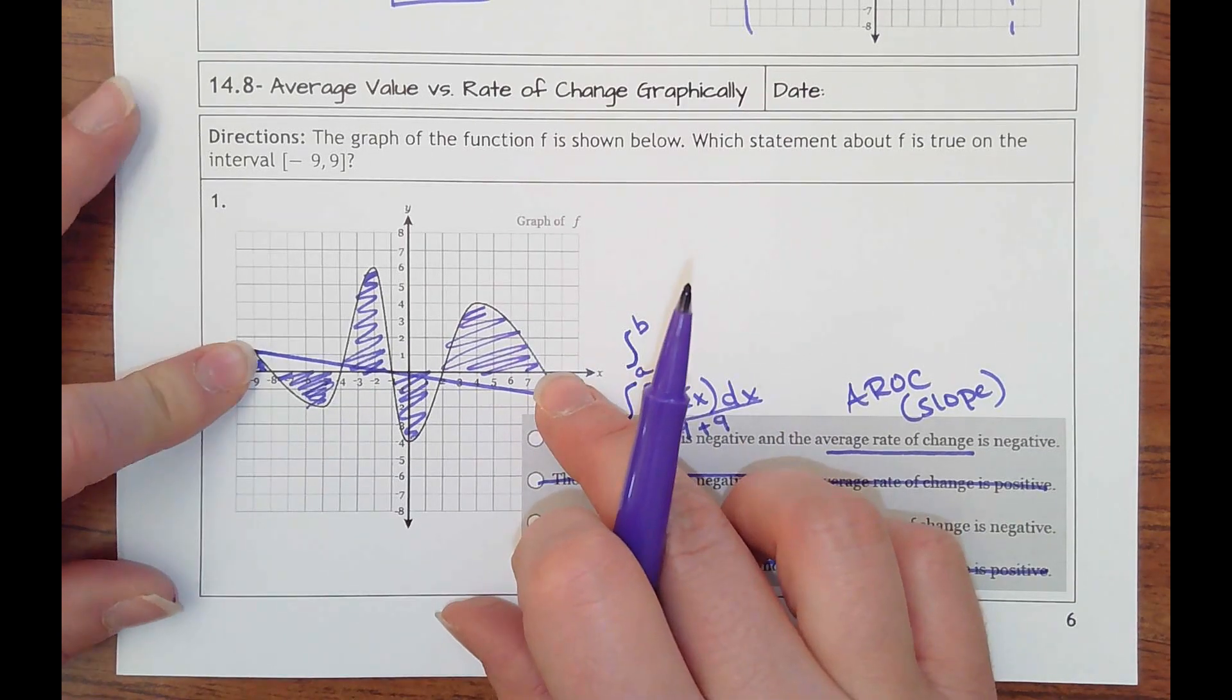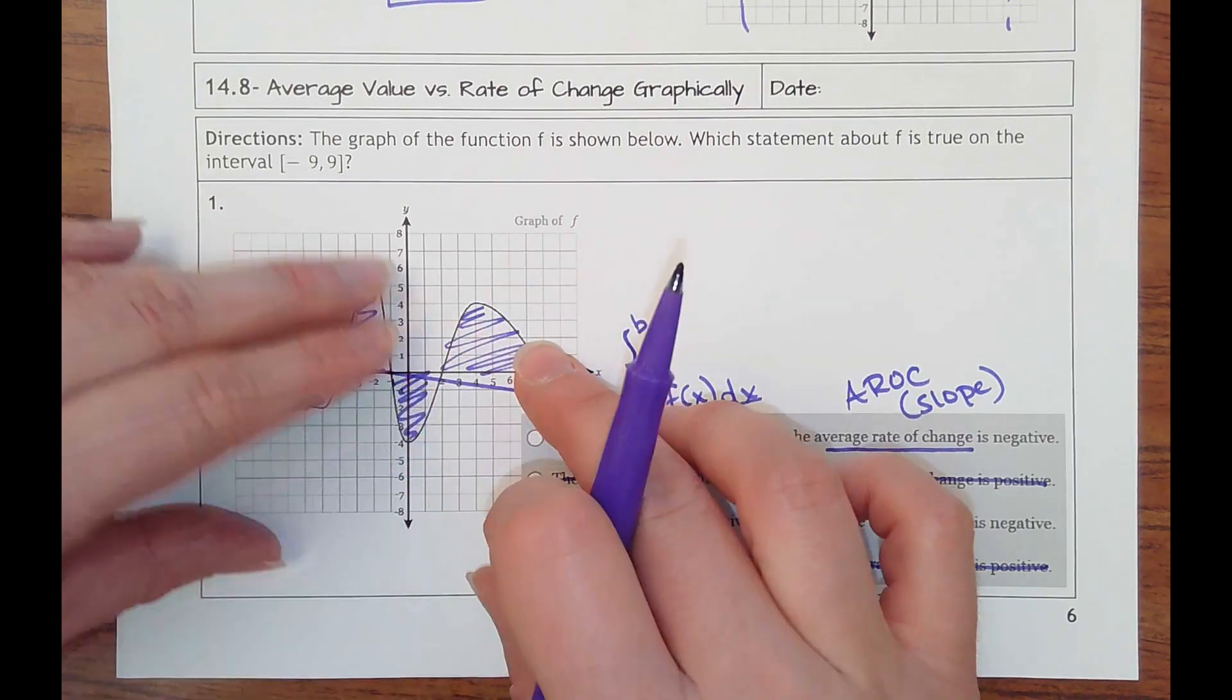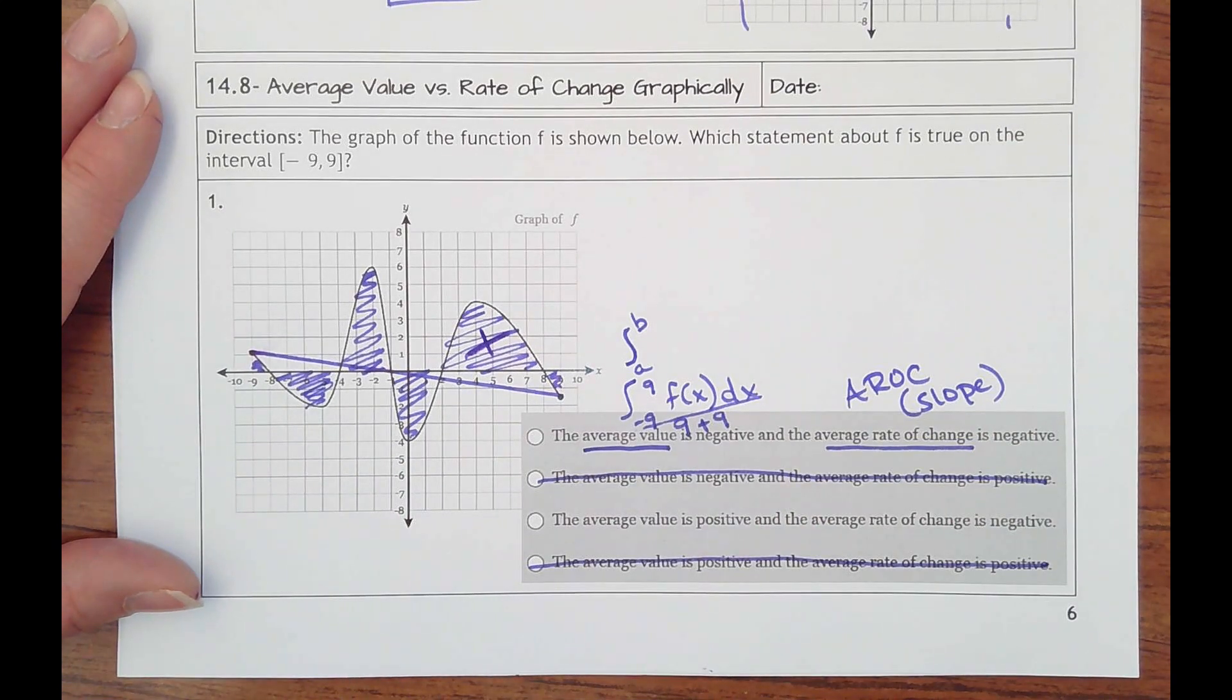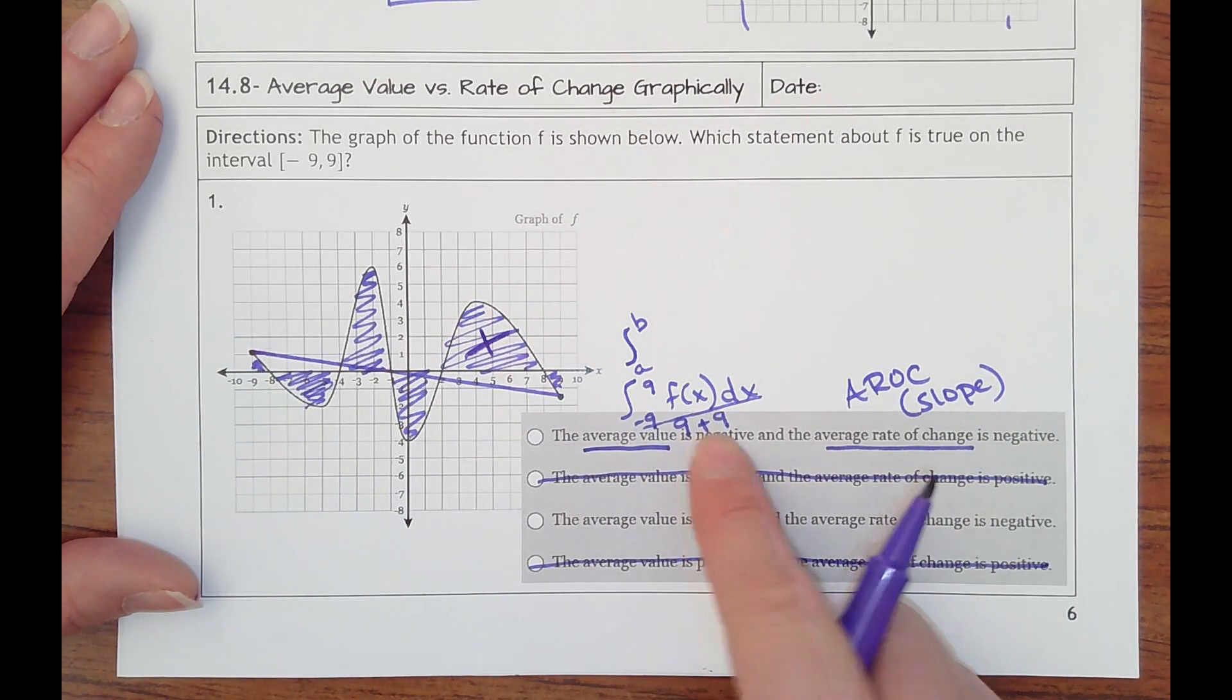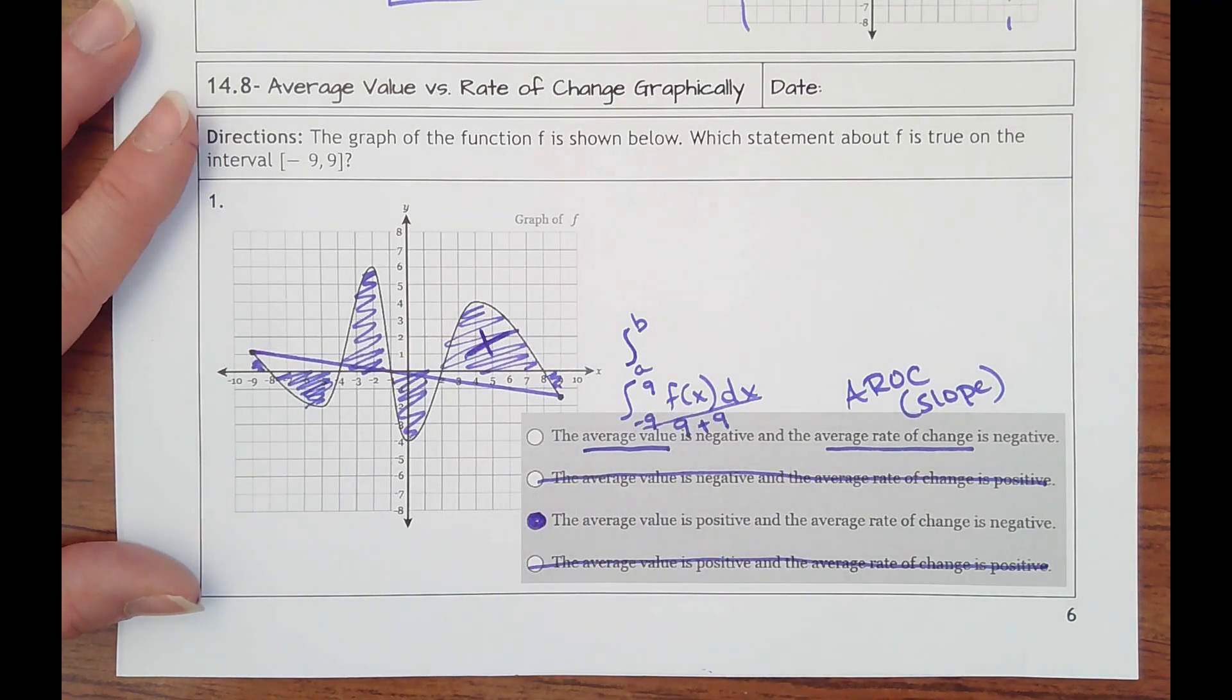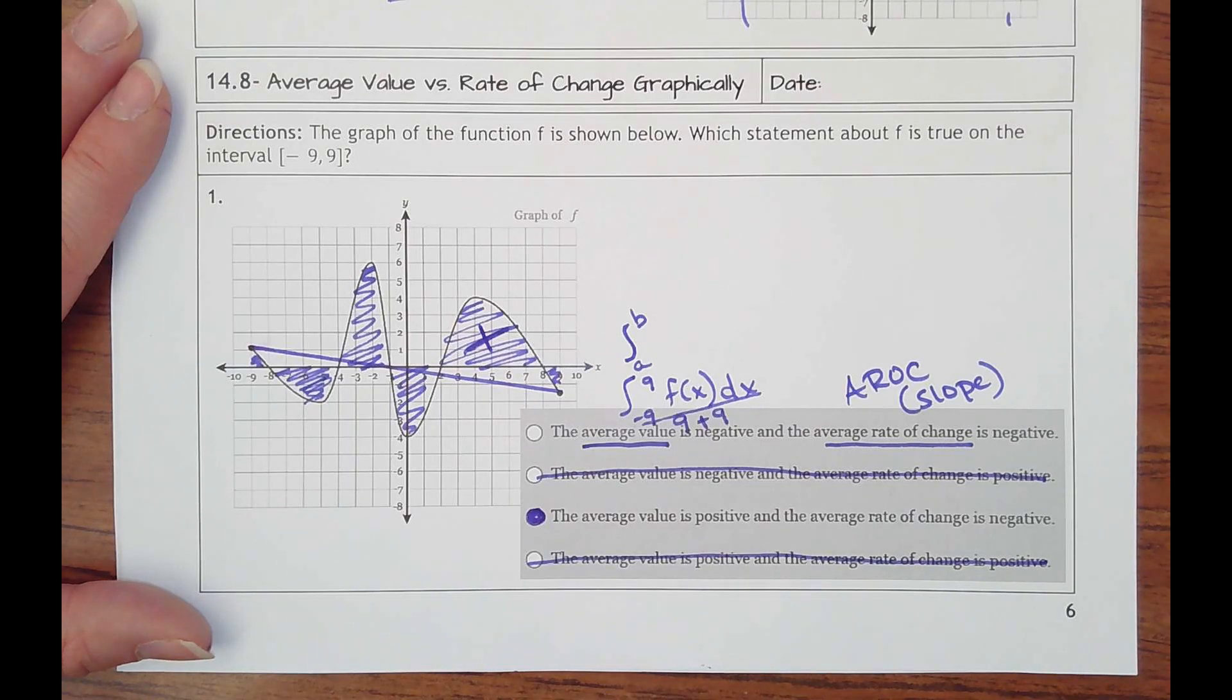There's a little negative. So those kind of cancel. I would say those kind of cancel. It looks like I'm going to have a lot of positive area when I net all of it. And so when I have the positive divided by 18, that's still going to be positive. So my average y value looks like it should be positive. So I'm going to select that one.